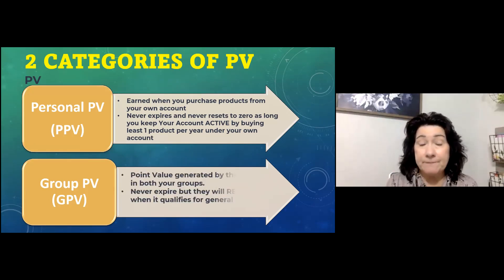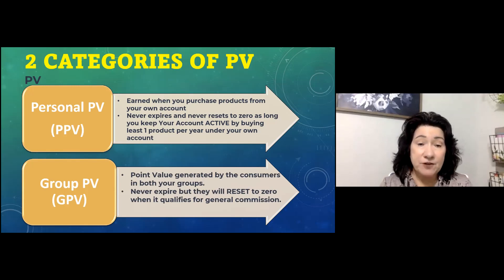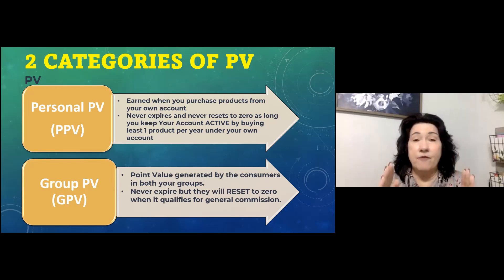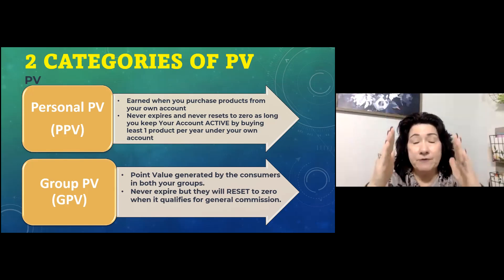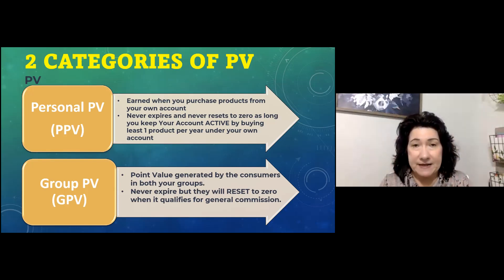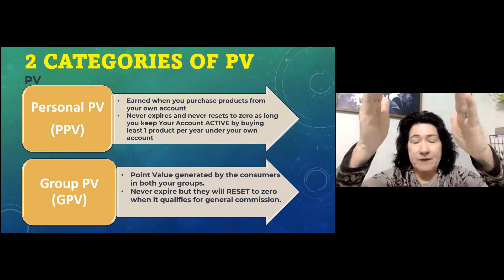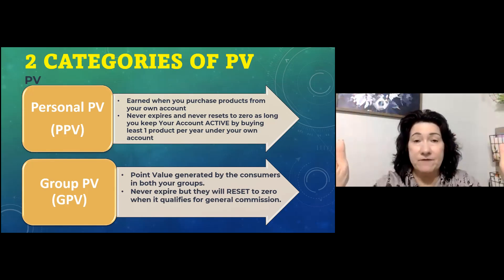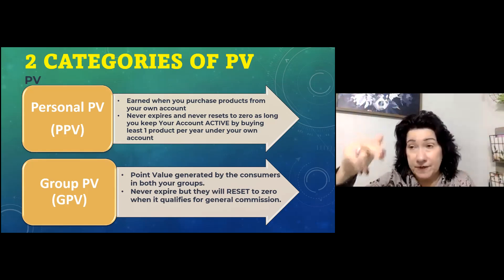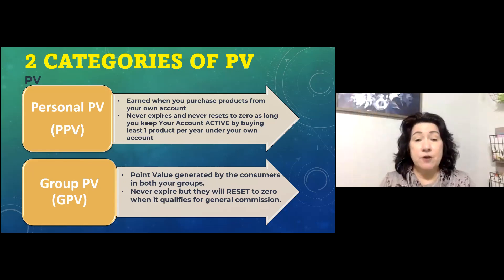Group PV is the point value generated by the consumers in both your groups — this is the binary system. You have a right side and a left side, and you sign people up under both. If the bottom person on the list orders something, everybody above them, including you, gets the benefit of the PV from their order. If it's the third person down from you, the points go three, two, one, and up to you.